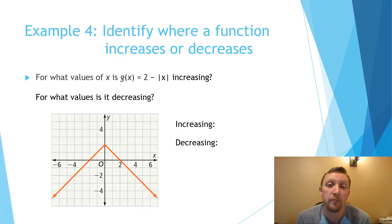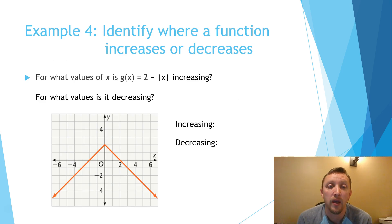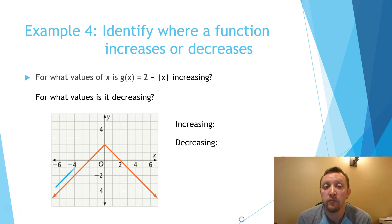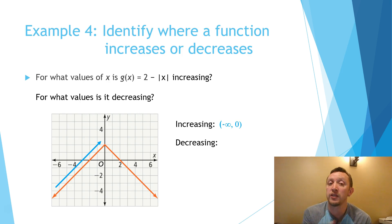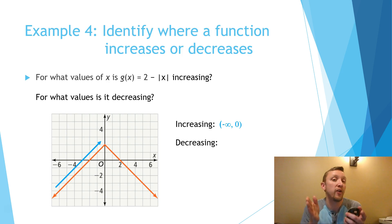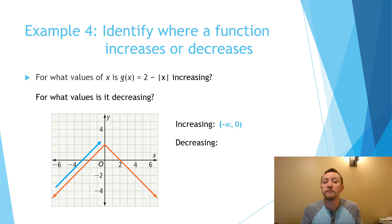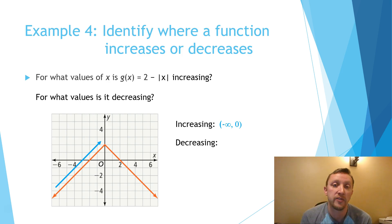Let's look at another example — how can we tell when a graph is increasing or decreasing? When we read a graph, we read it like a book: from left to right. Looking at this graph, we can see that from left to right it is increasing from negative infinity to 0. We're looking at the x values where the graph is increasing, so from negative infinity to 0 is where the graph is increasing.